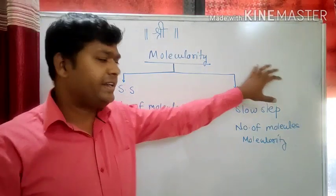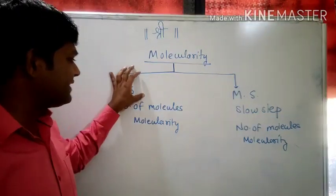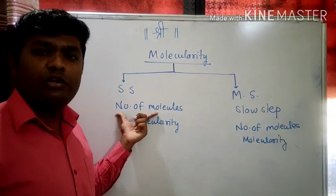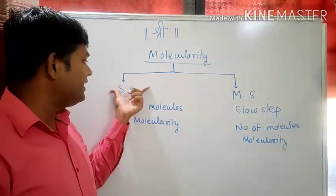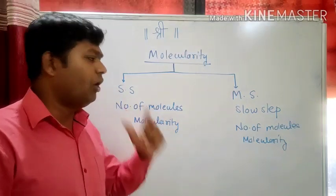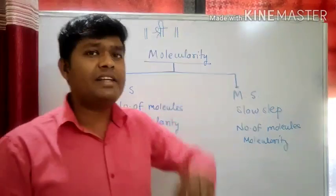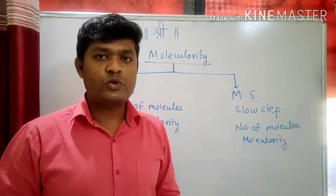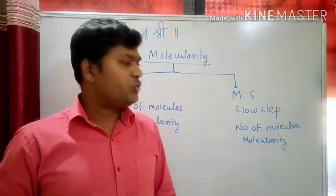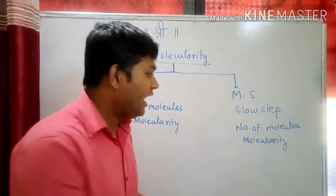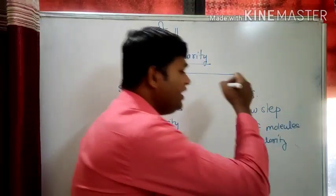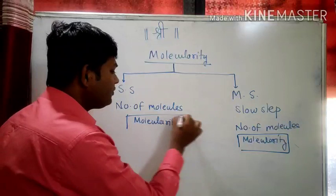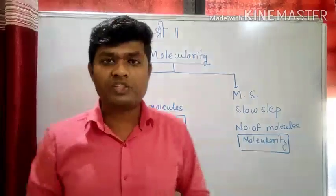If you have predicted the reaction is a single step, then see the number of molecules. The number of molecules in that single step reaction will be the molecularity of the reaction. If the reaction is a multi-step reaction, go for the slow step. Out of many steps, find out which is the slow step, and then see how many molecules are involved in the slow step. That will be your molecularity of the reaction.